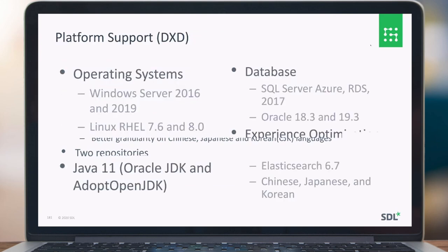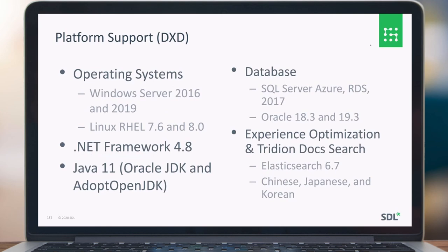Platform support for DXD: supported operating systems are Windows Server 2016 and 2019. For Linux, we support Red Hat Enterprise 7.6 and 8. For .NET framework, 4.8 is supported. For Java, we support both Oracle JDK 11 and AdoptOpenJDK 11. For databases, we have SQL Server, Azure RDS 2017, Oracle 8c and 9c. For experience optimization and trading docs search, we have Elasticsearch 6.7 and also support for Chinese, Japanese, and Korean languages.